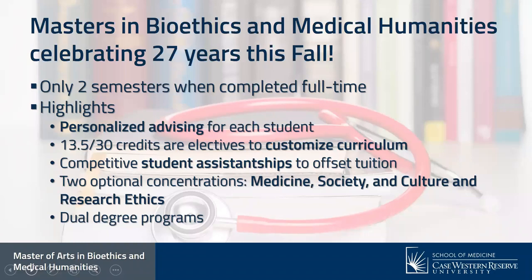If you do a concentration, it's a deep dive into one area. The Medicine, Society, and Culture concentration is a deep dive into medical humanities, social medicine, and medicine and arts. The Research Ethics concentration is a deep dive into regulatory and IRB ethical issues. For a concentration, you'd have another 4.5 credits of required coursework — a core seminar and a contemporary topics course. In the spring semester, there are different options for practica in addition to our traditional clinical ethics rotations.